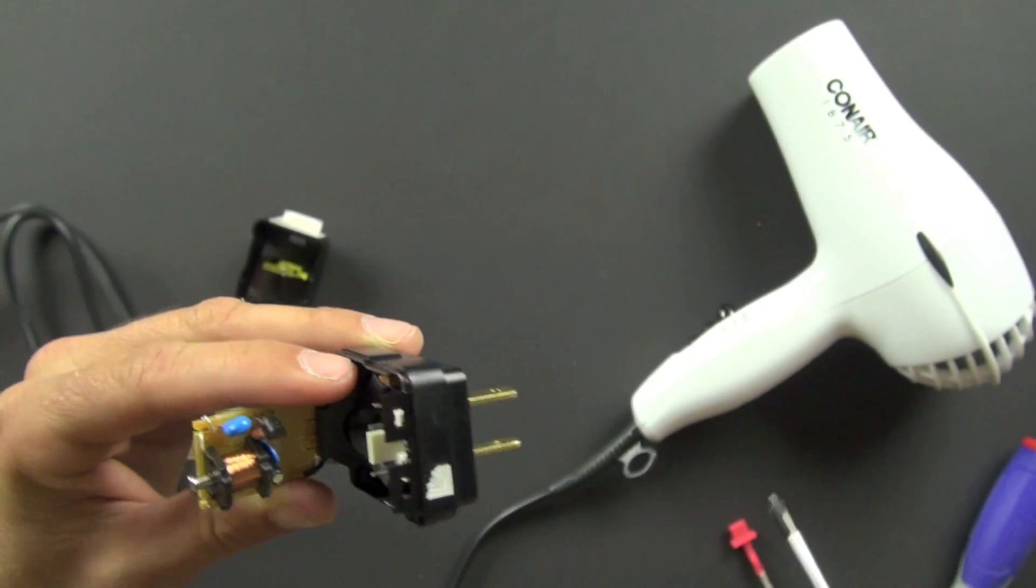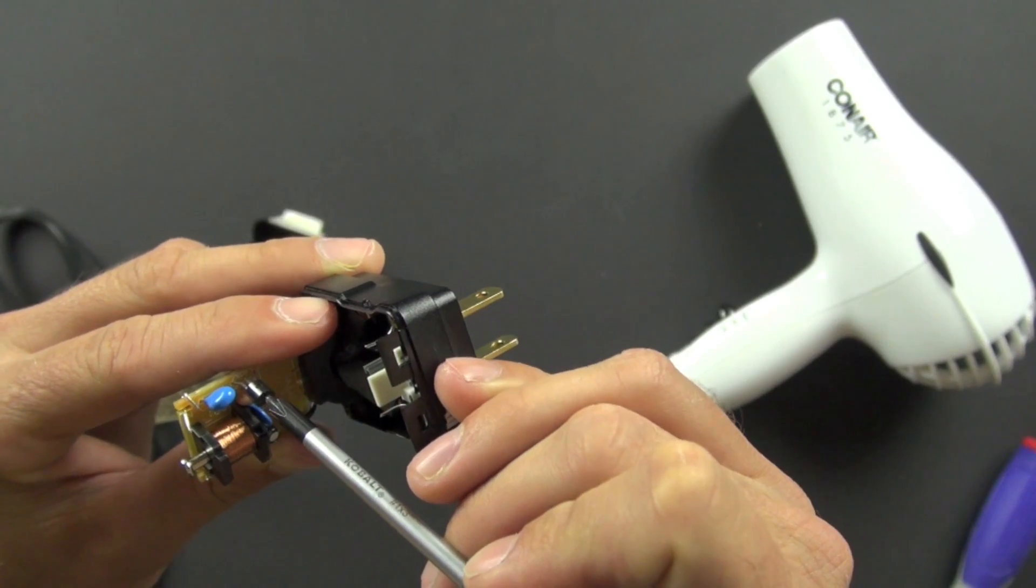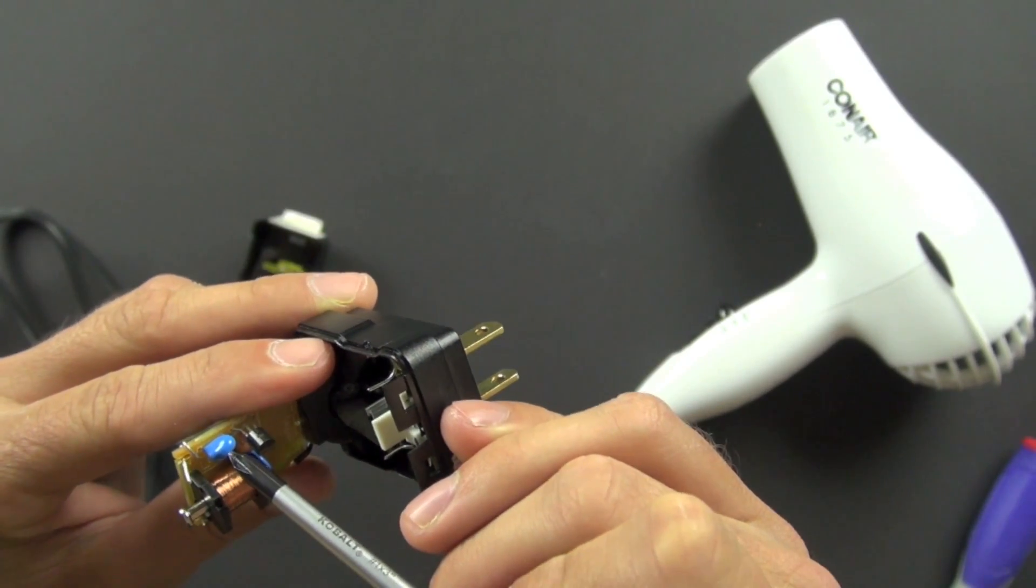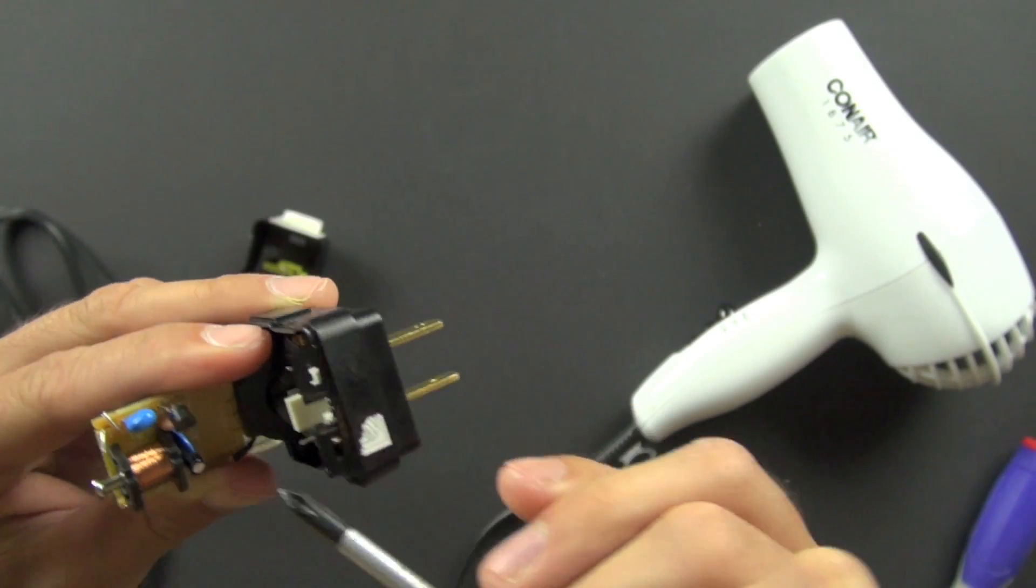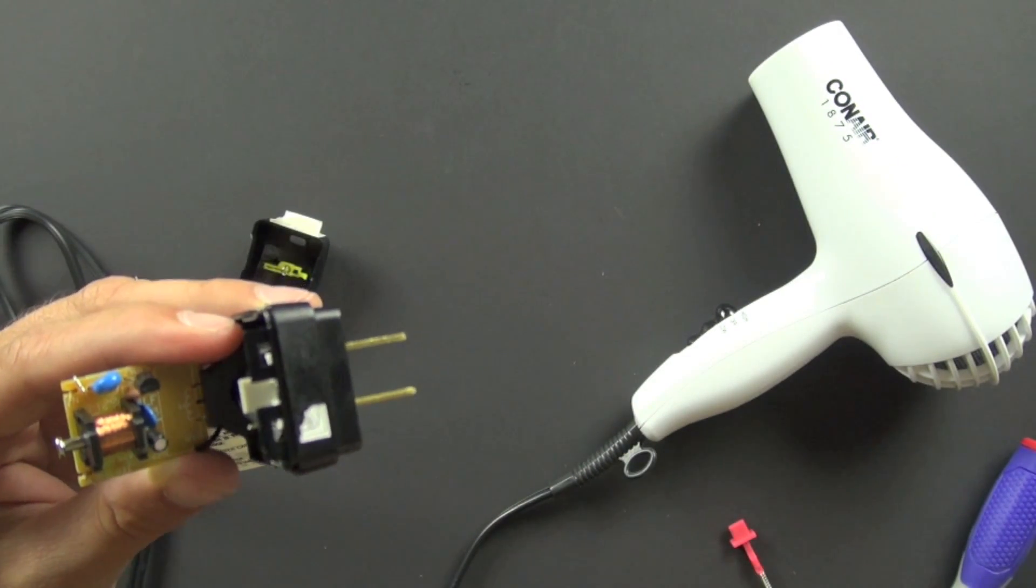And I'll take this out so you can see it better. And this is called a transistor. So it can function like a switch in a circuit. And this is called a varistor, or a variable resistor. And it can protect the circuit from high voltages and things like that.